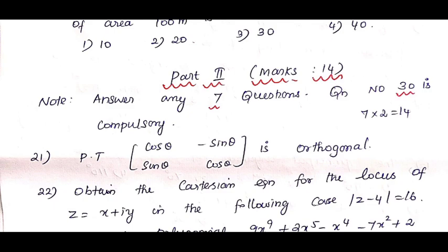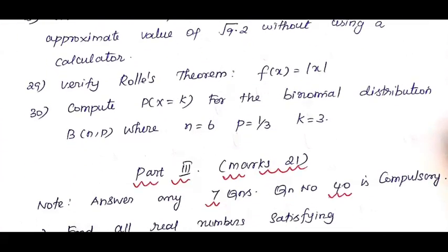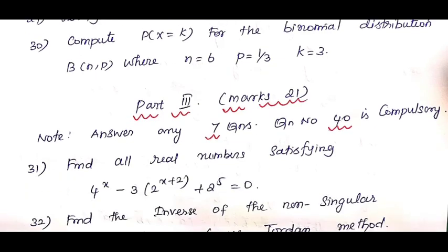In Part 2, you will have 72 marks. It will be 30 questions compulsory. If you read the 30th question, you will see the answer.